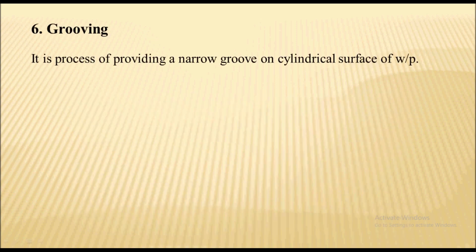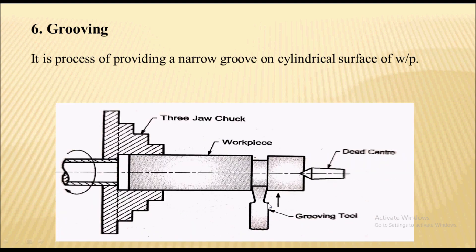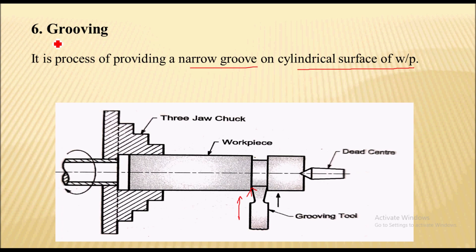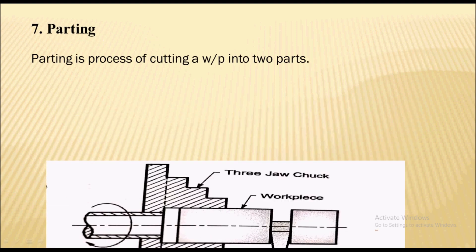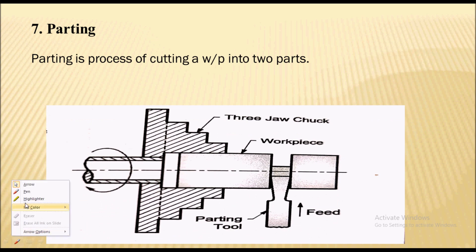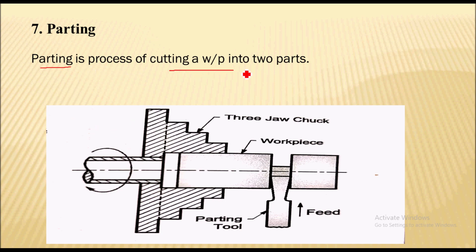The next operation is grooving. In the grooving operation, a narrow groove is provided on the cylindrical surface of the workpiece using a grooving tool. Next is the parting operation — if the workpiece length is too much and we want to cut it into two parts, parting operation can be performed on the lathe machine. Parting is a process of cutting a workpiece into two parts.